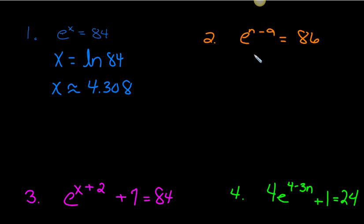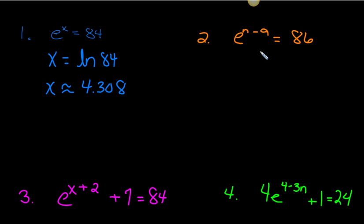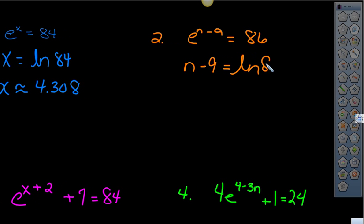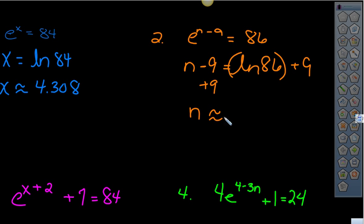Question number two is the same thing with just one more operation. The exponential part is already isolated, so we convert it: the exponent is the natural log of 86. We're solving for n, so we add 9 to both sides — being careful not to add that 9 to the 86, since it's part of the logarithmic value. You get n approximately equal to 4.543.